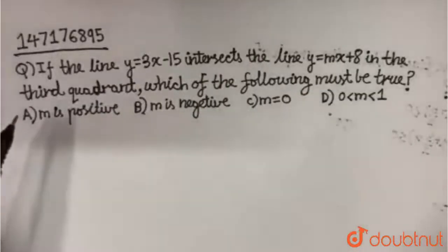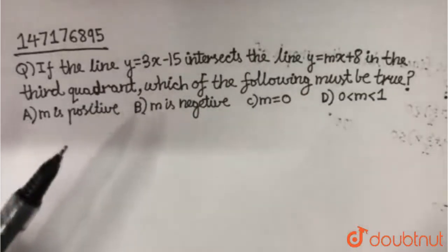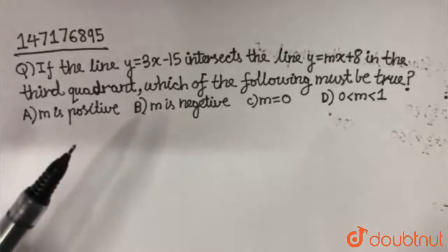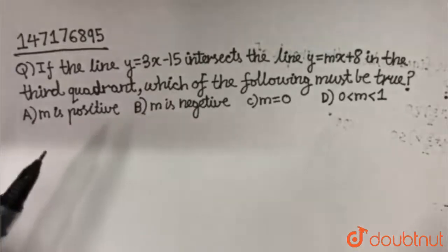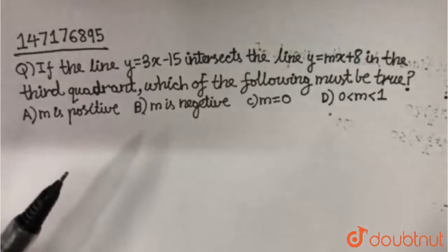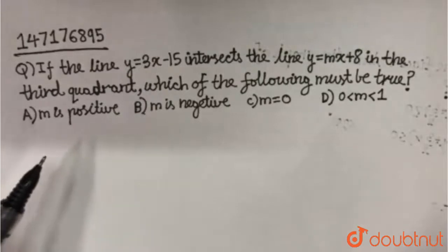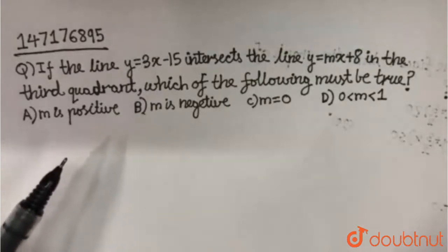The question says: if the line y = 3x − 15 intersects the line y = mx + 8 in the third quadrant, which of the following must be true? There are four options given depending upon the nature of m.